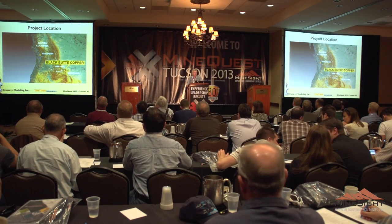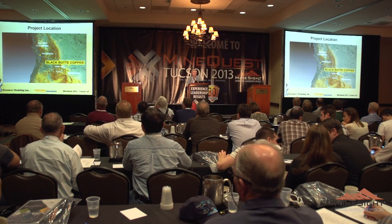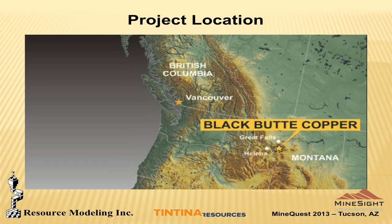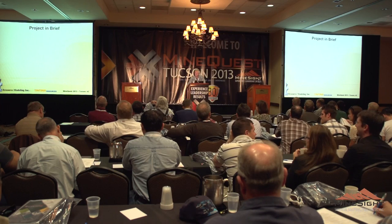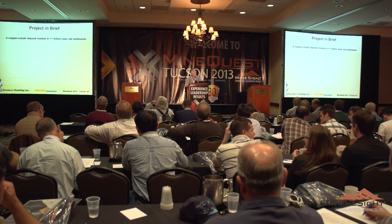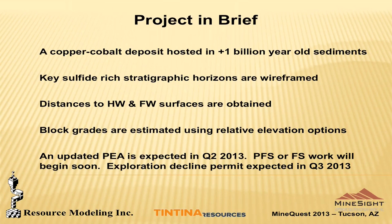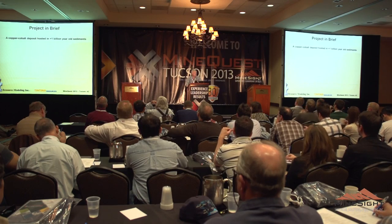My topic is the Black Butte Copper Project, which is located in Montana, about 1,000 kilometers southeast of Vancouver and roughly 120 kilometers east of the capital city of Helena, Montana. This is a copper-cobalt deposit hosted in Proterozoic sediments in the Belt rocks, about 1.2 billion years in age. One of the really neat things about these rocks is there's very little metamorphism, so sedimentary structures are still very vivid.